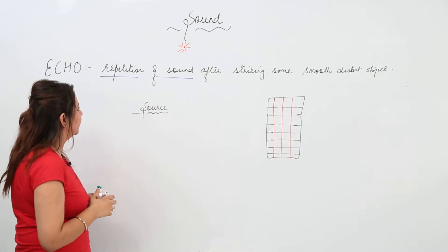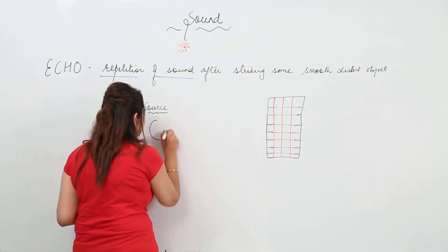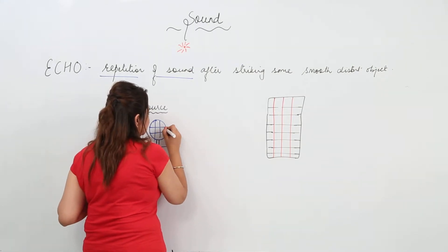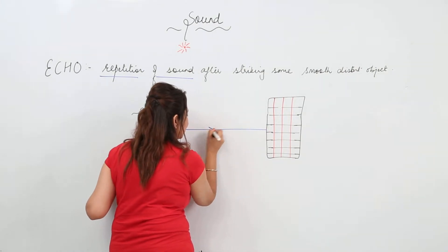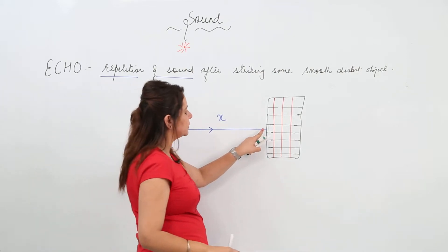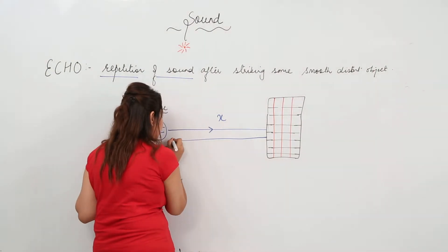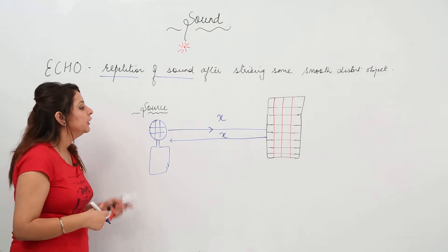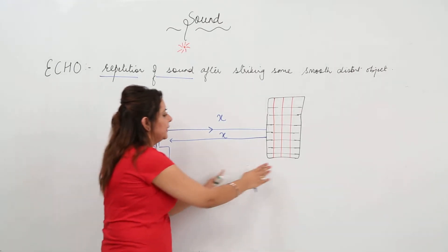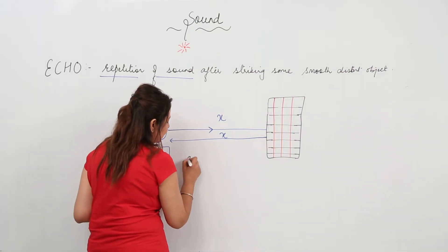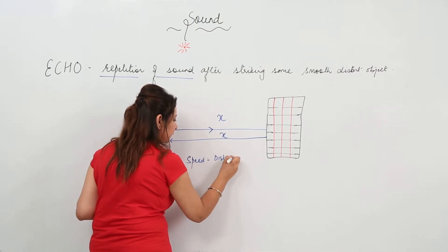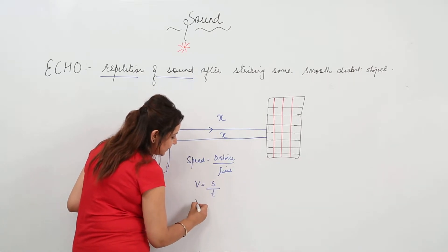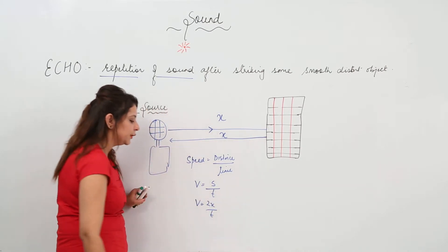Let's see how an echo occurs. Suppose this is the source of sound — a person emitting sound. The sound travels a certain distance, let's say x. When the sound waves strike an object, they get reflected back and travel the same distance x back to the source. So the source can hear its own sound again. The total distance traveled is 2x.